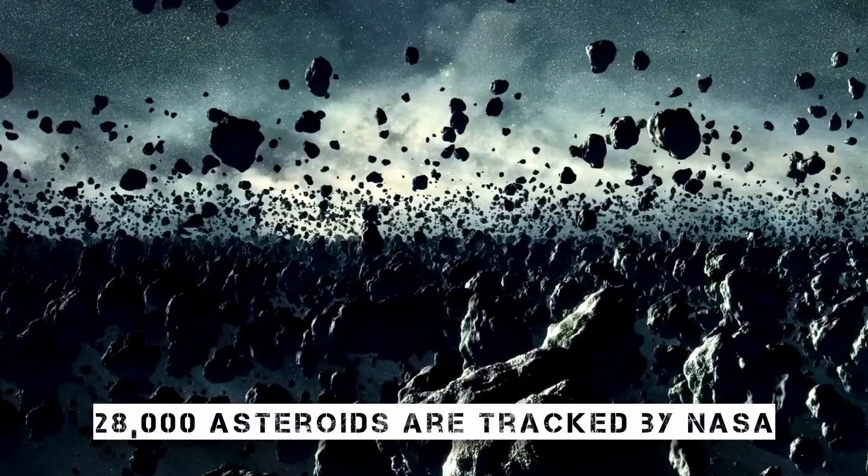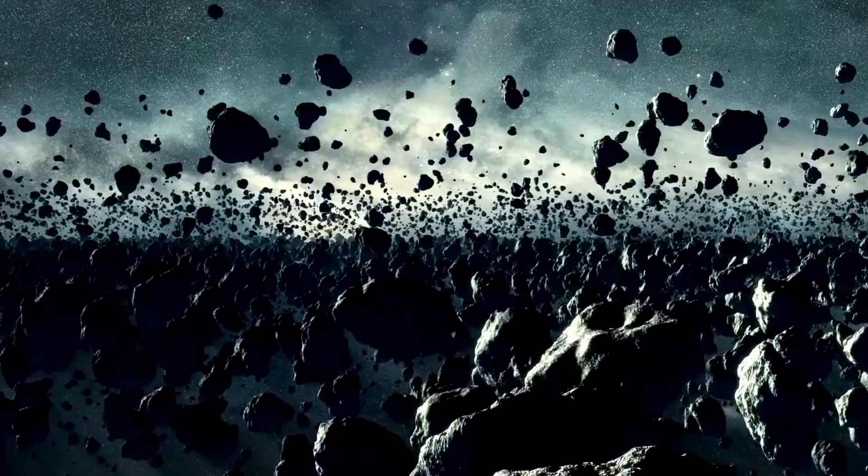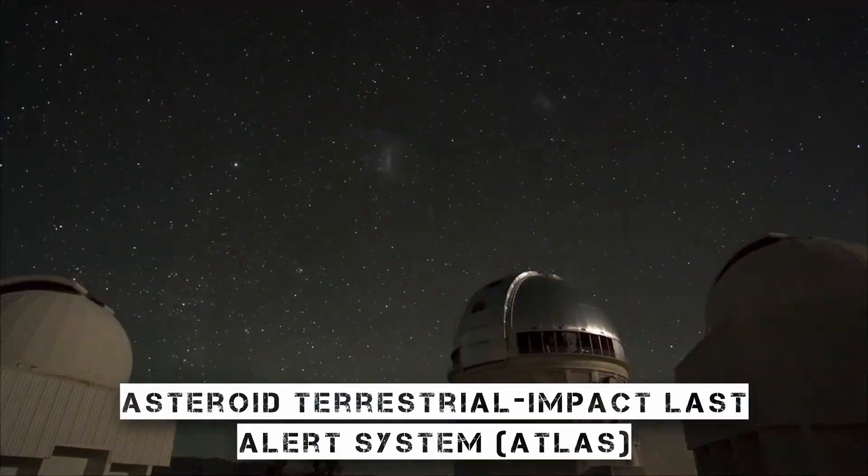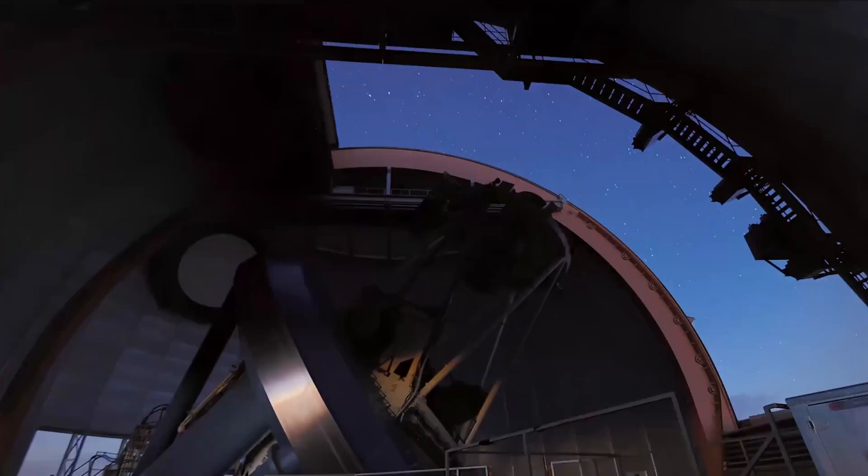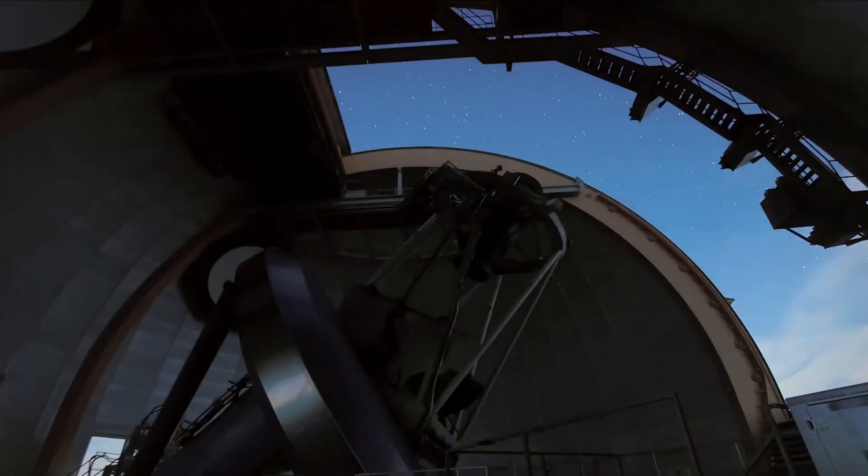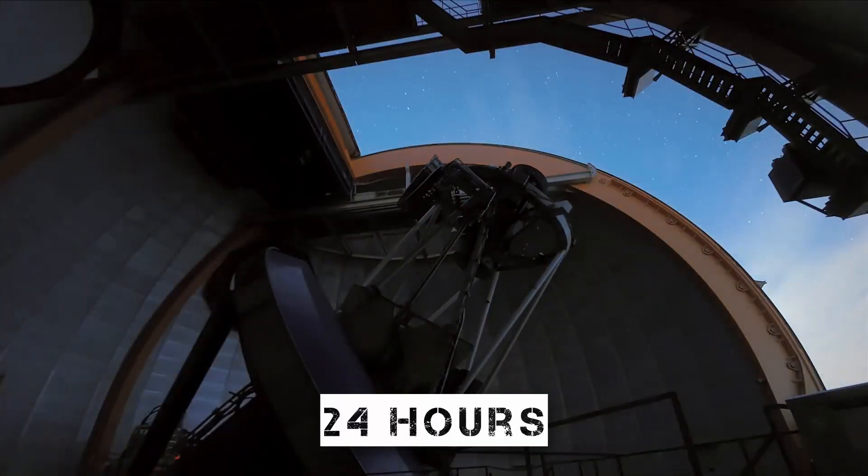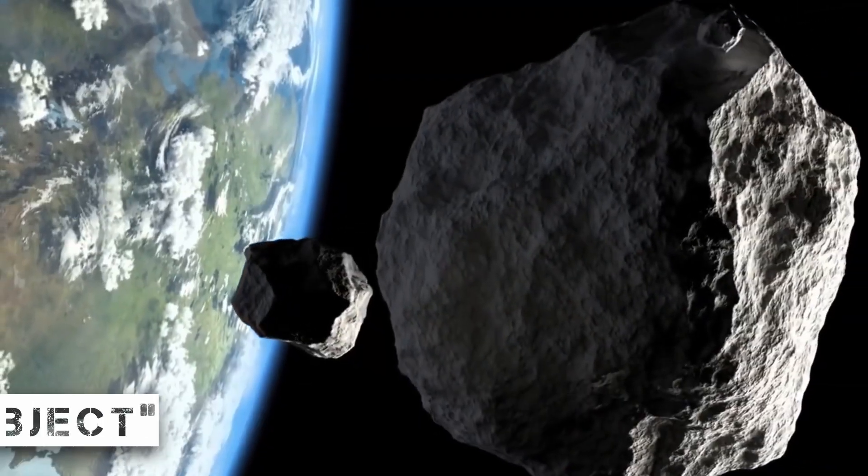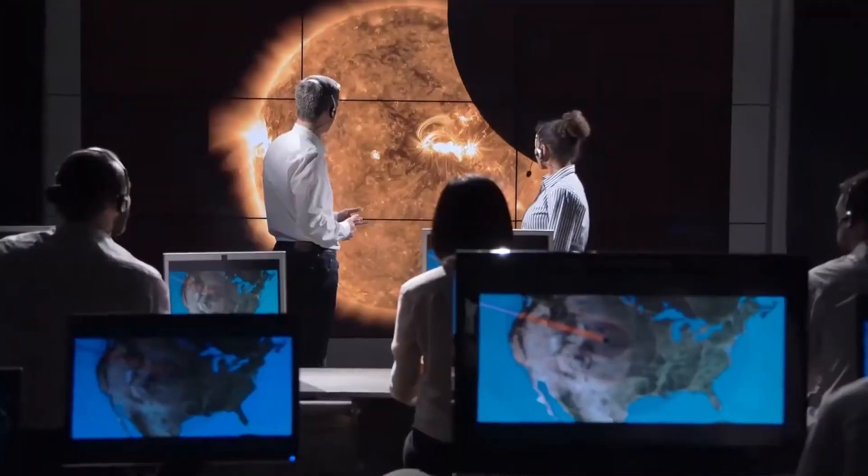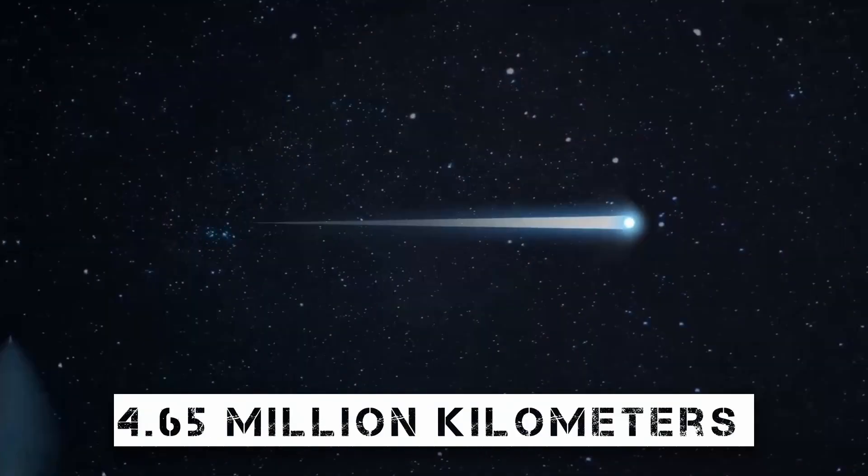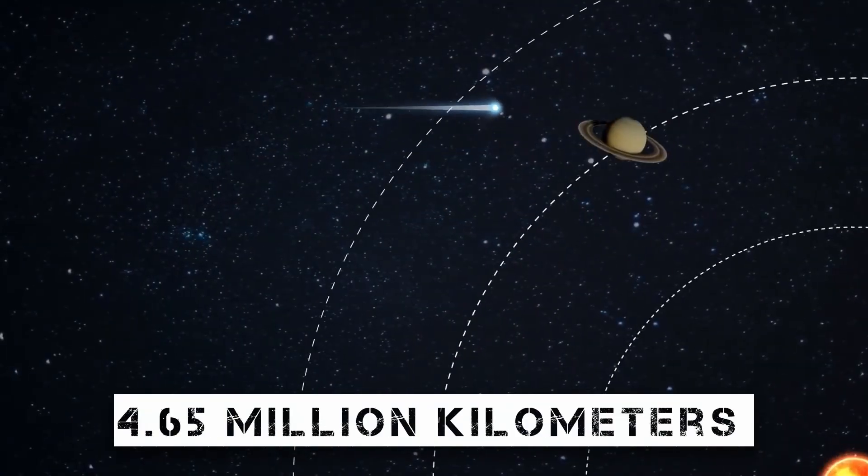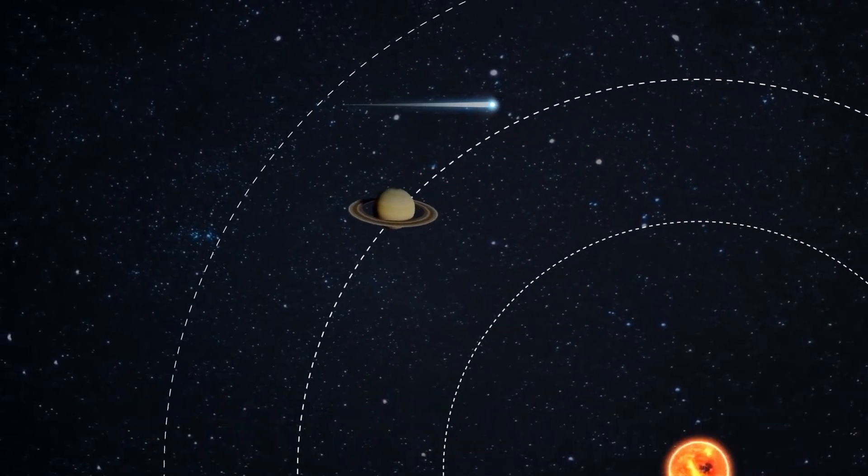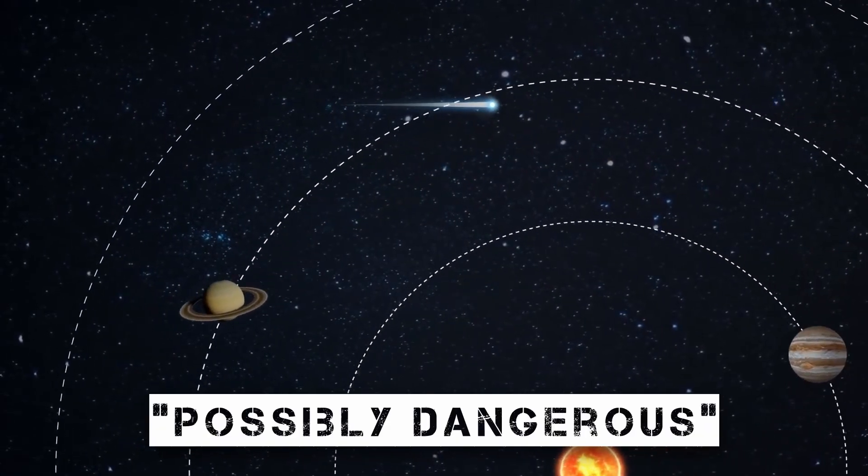About 28,000 asteroids are tracked by NASA using the Asteroid Terrestrial Impact Last Alert System, or ATLAS, a network of four telescopes that can survey the whole night sky once every 24 hours. Any space object that comes within 193 kilometers of Earth is designated as a near-Earth object by the Space Agency, and any huge body that comes within 4.65 million kilometers of our planet is categorized as potentially dangerous by the same organization.